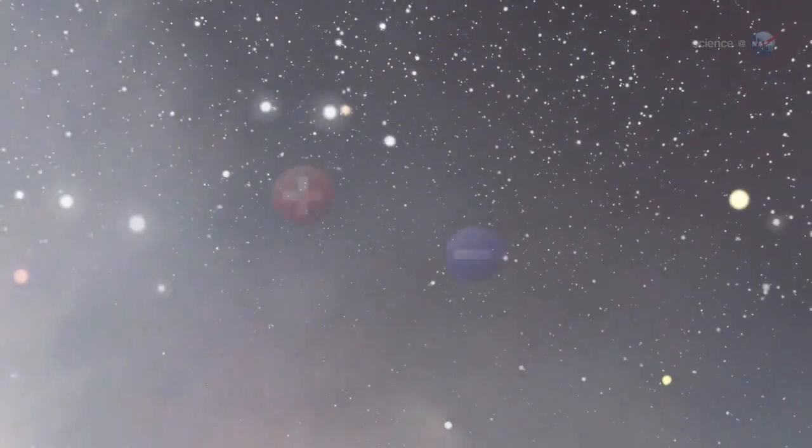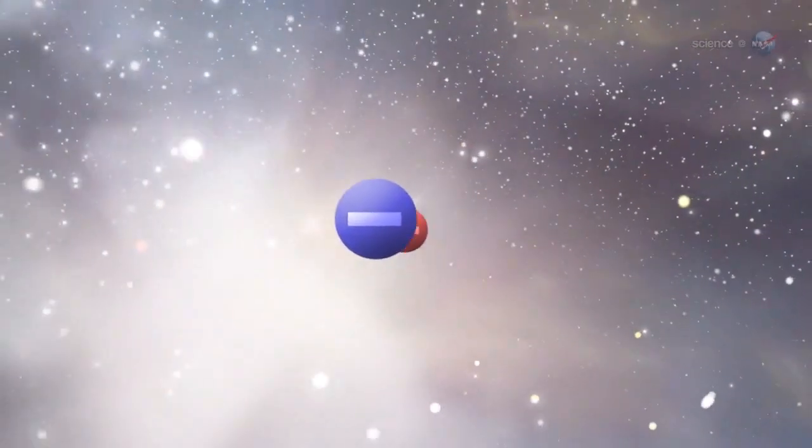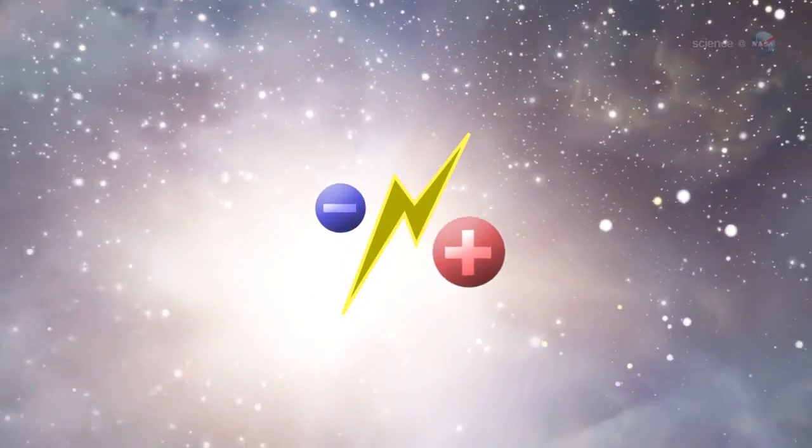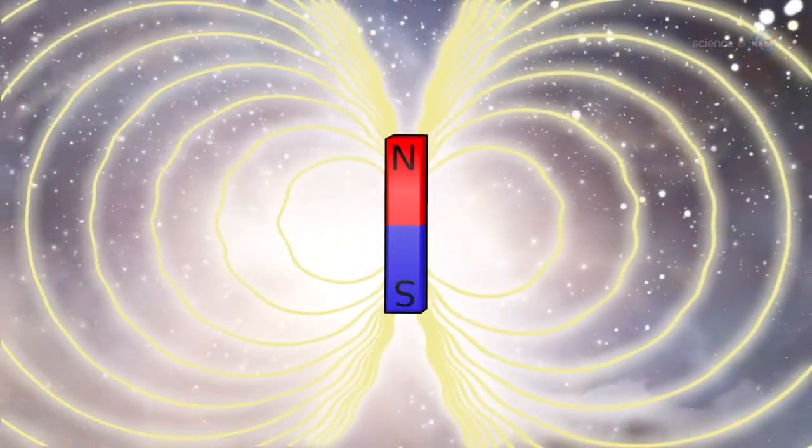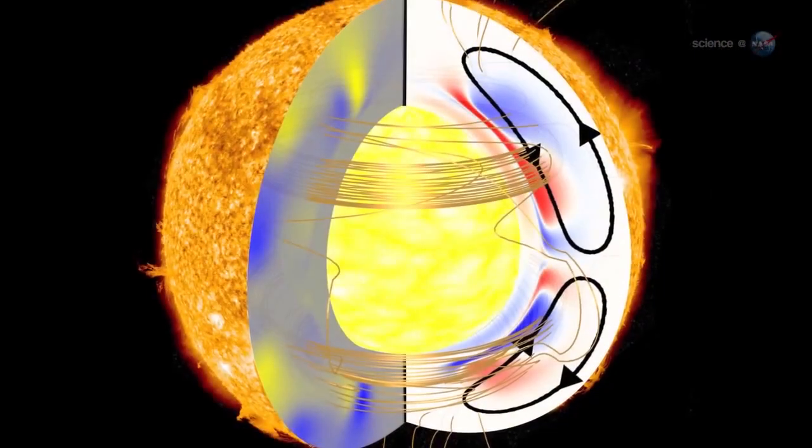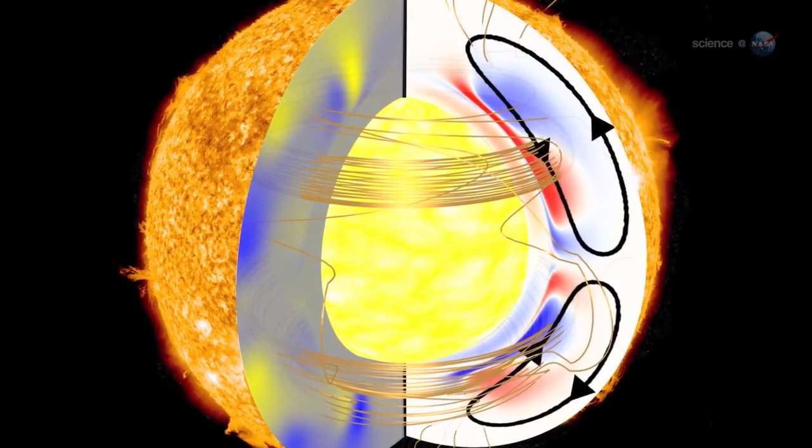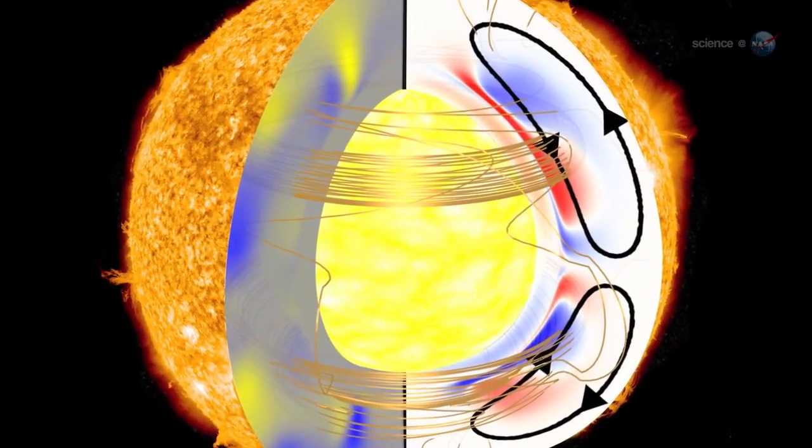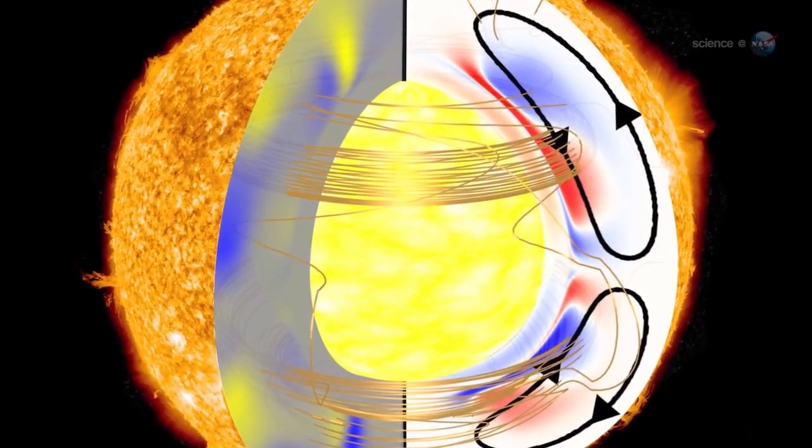The motions of the interstellar gas, which is an electric conductor, generate electric currents, which in turn generate magnetic fields. Similar currents move through the molten core of Earth and in the interior of the Sun, except this is on a vastly larger scale.